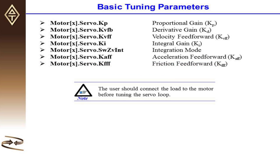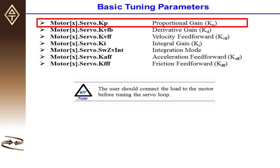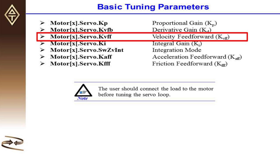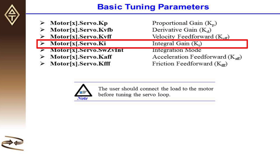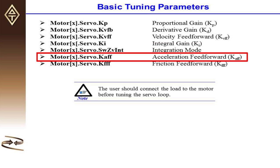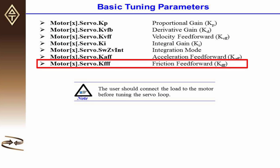The basic parameters that we need to modify when tuning are as follows: proportional gain (kp), derivative gain (kd or kvfb), velocity feed forward (kvff), integral gain (ki), integration mode, acceleration feed forward, and friction feed forward.